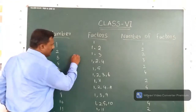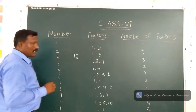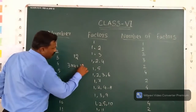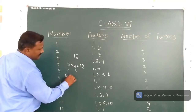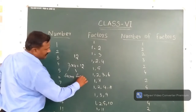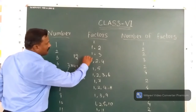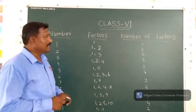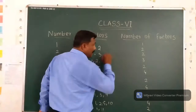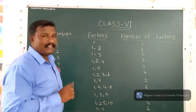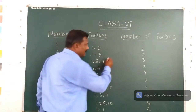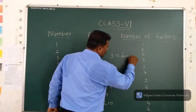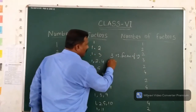For example, if you take 12, it's a number. If you find the factor of 12, we can say 3 times 4 is 12. So 3 and 4 are both factors of 12. But 12 is the multiple.